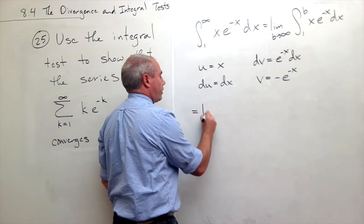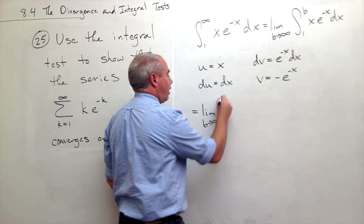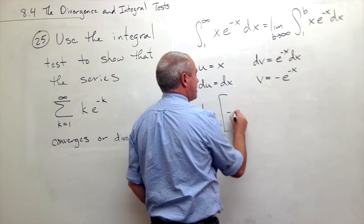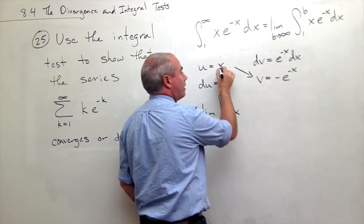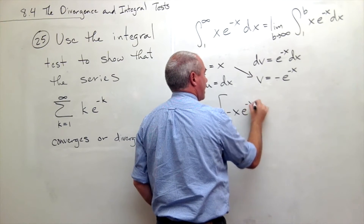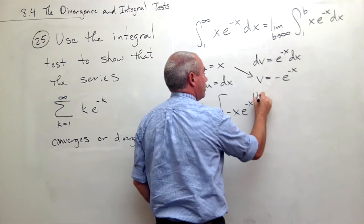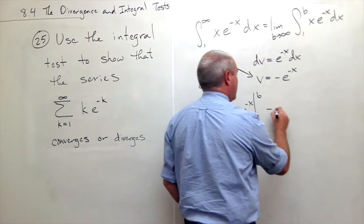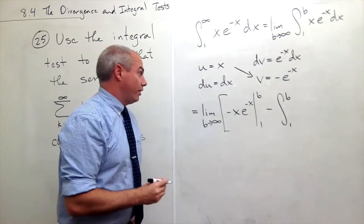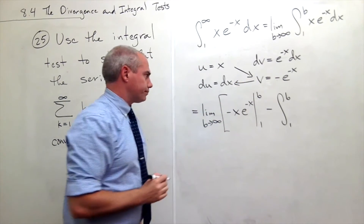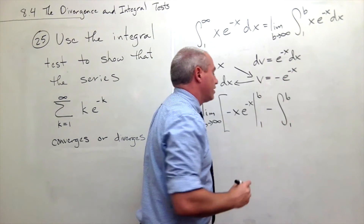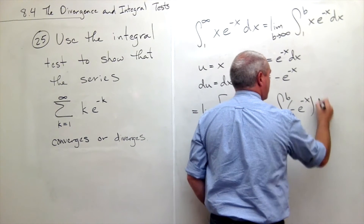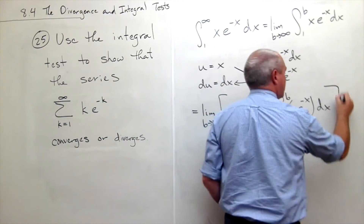Now we're ready to rewrite this integral using integration by parts. We still have the limit as B goes to infinity out in front. We have u times v, which is negative x e to the minus x, evaluated from 1 to B, minus the integral from 1 to B of v du — that is, negative e to the negative x dx.